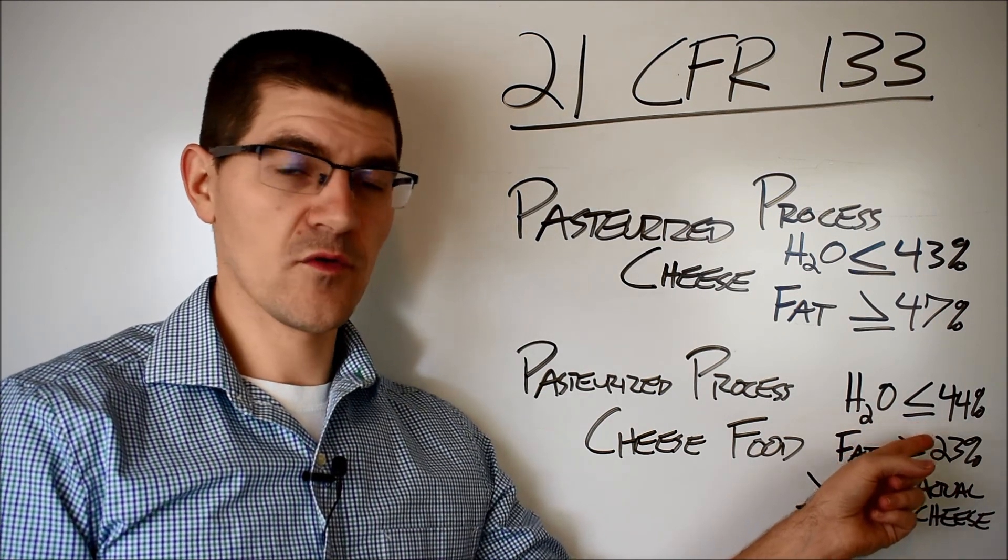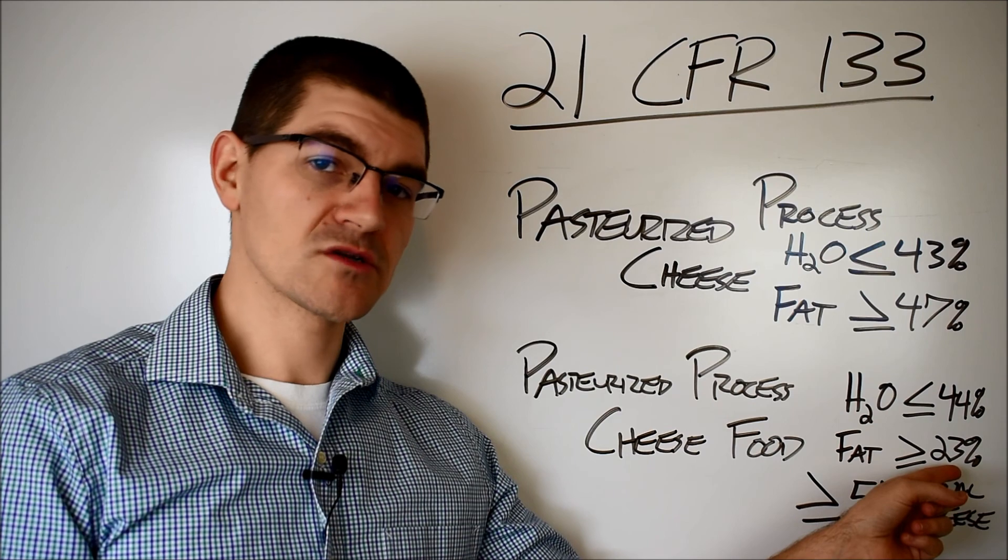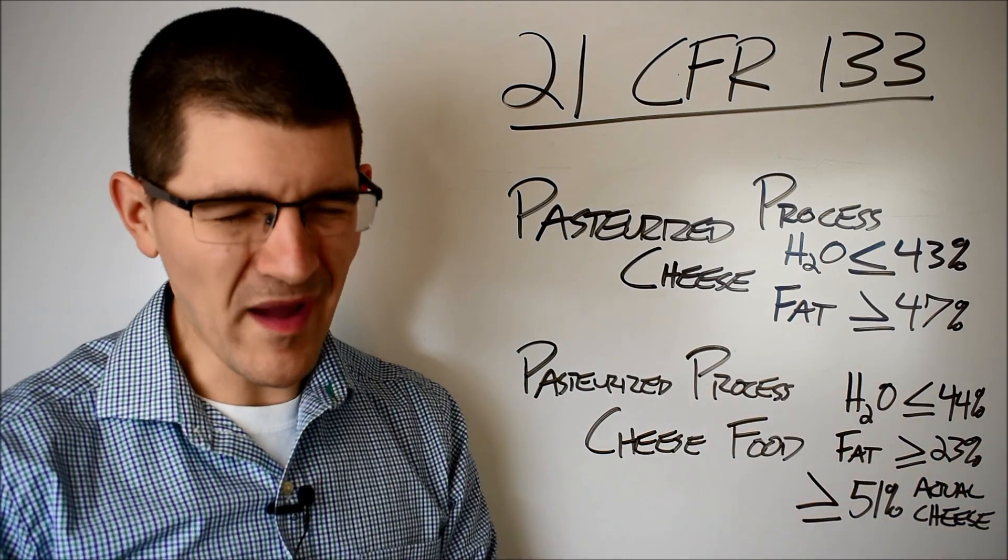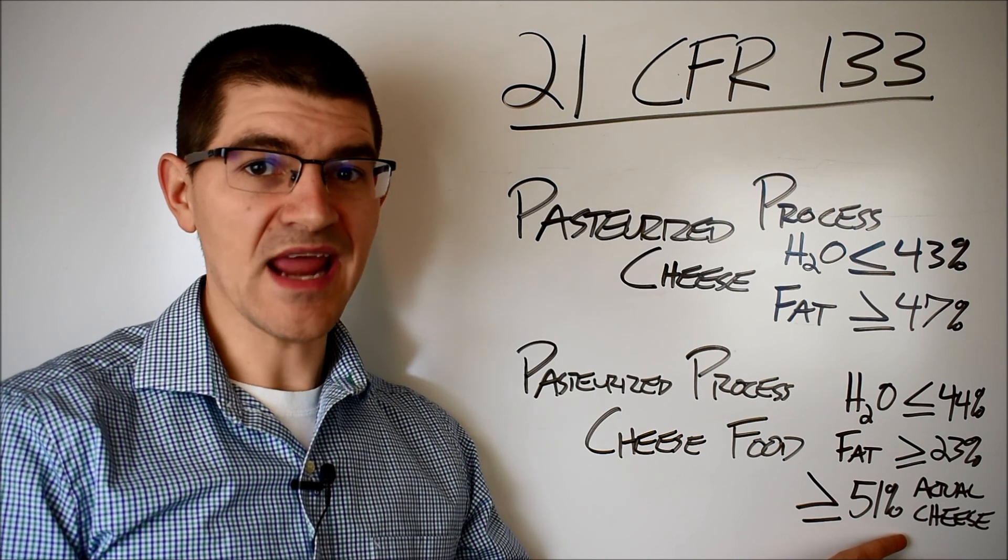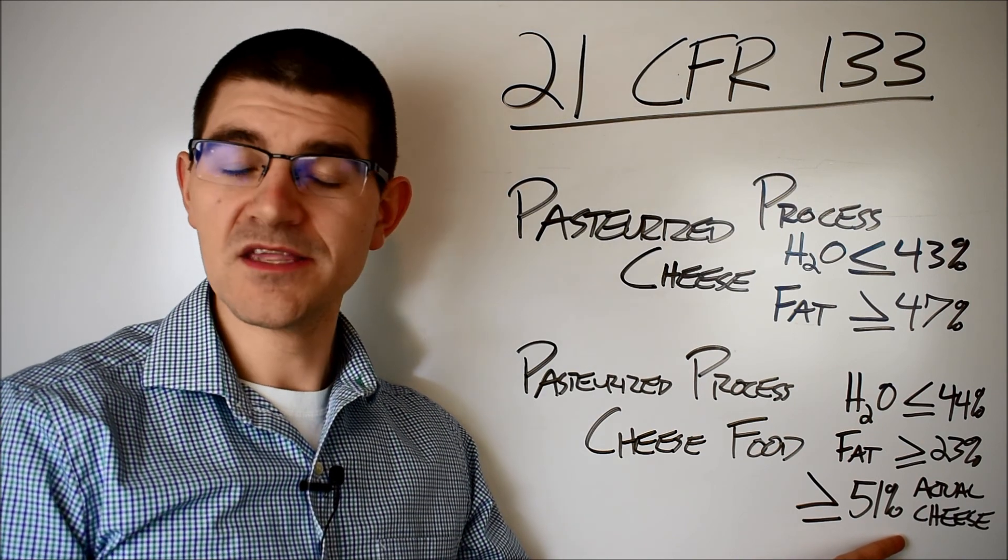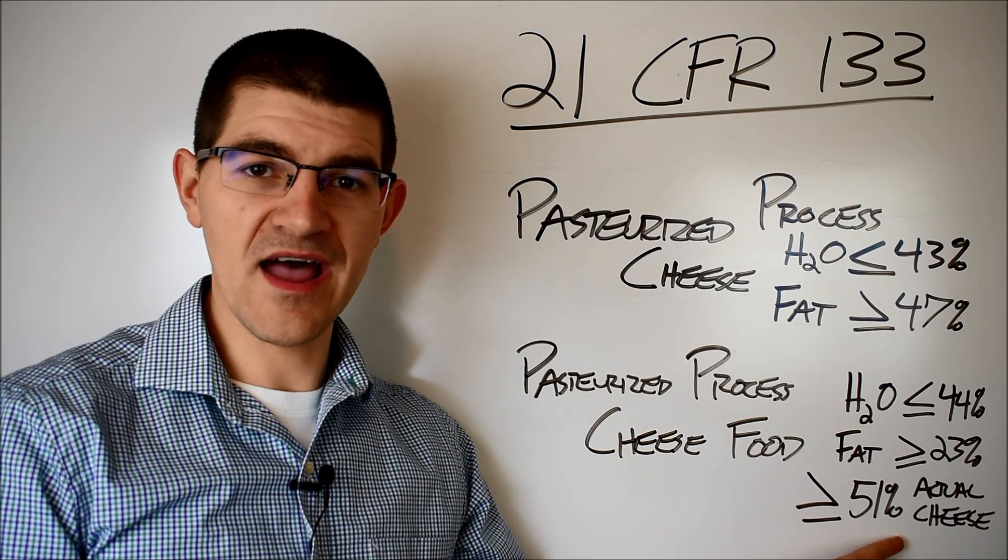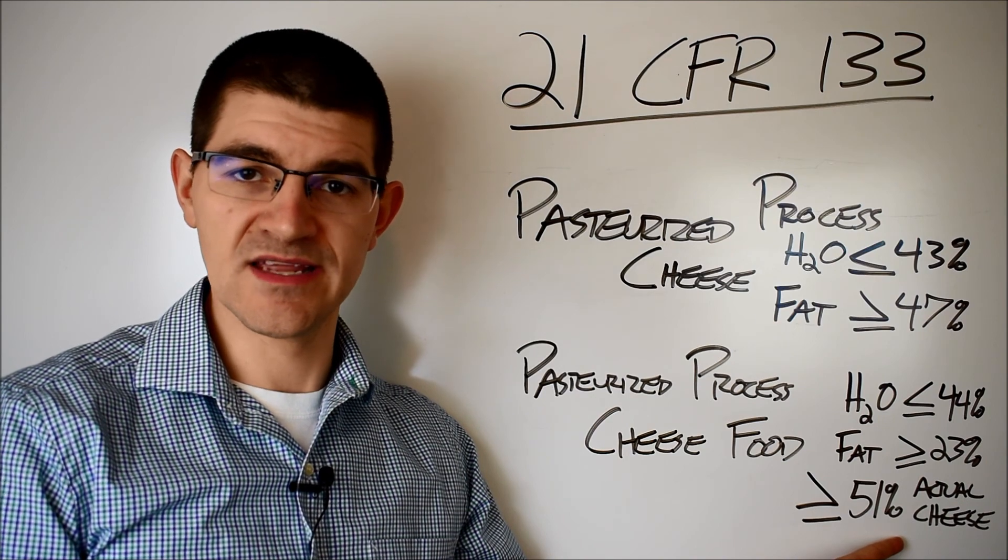Pasteurized processed cheese food is pretty similar but has more additives in it so the regulations are loosened a bit. Max moisture content is 44% and minimum fat is a meager 23%. Oh, by the way, pasteurized processed cheese food has to have at least 51% actual cheese in it. You can see where we're headed if we have to define how much cheese is actually in your damn cheese.